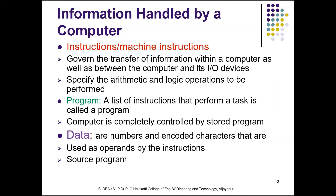A program written in a high-level language is called a source program. This program must be converted into machine-level language — understood by the computer — because a machine only understands machine-level language, which is in zeros and ones (digital signals). The program converted into machine-level language is called an object program.